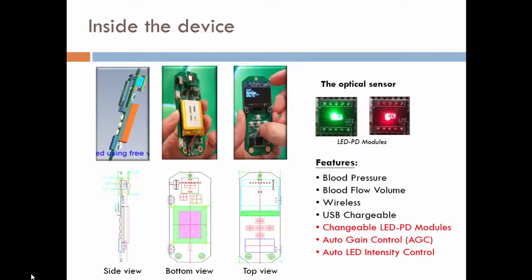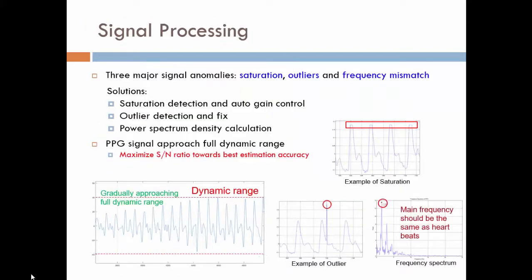So here are the LED and PD module. Several very important features we have implemented: the LED and PD module is actually changeable for different wavelengths, and the PGA inside has the functionality of AGC auto-gain control. And also we will based on the quality of the PPG signal online tune the LED emission intensity in order to take care of different skin colors.